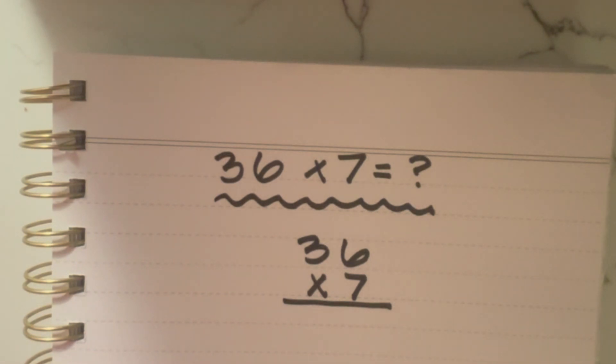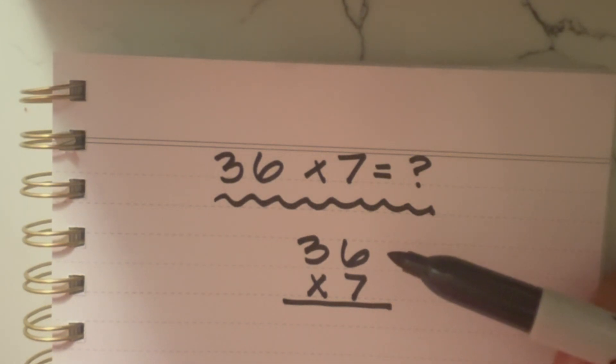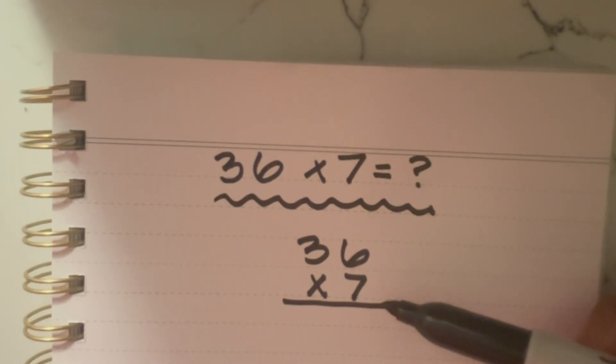Rewriting this vertically as opposed to horizontally like we have it up here is going to make it easier visually to solve. When we are multiplying a two-digit number like 36 times a single-digit number like 7, we can write it in this format. The first thing we're going to do is take this 7, the single-digit number down here, and multiply it by the number directly above it, which is 6.